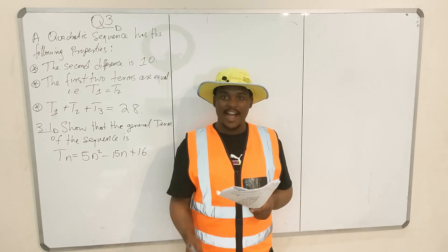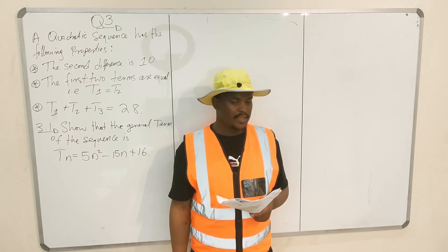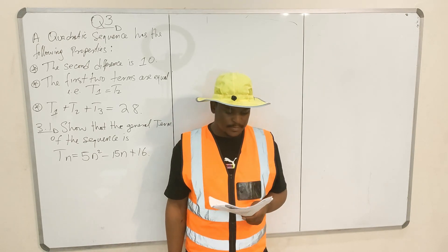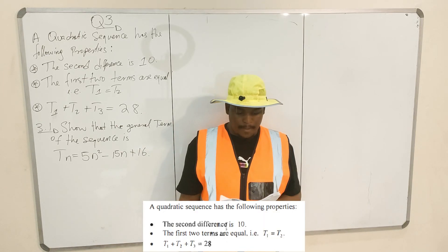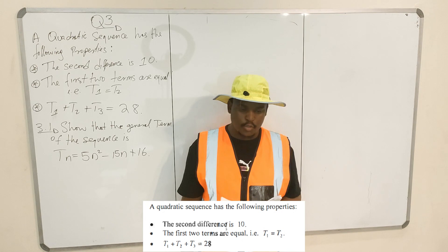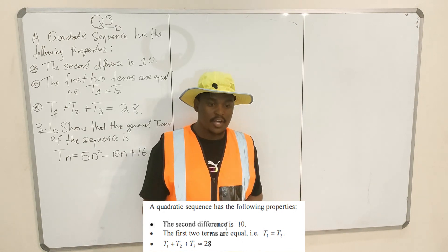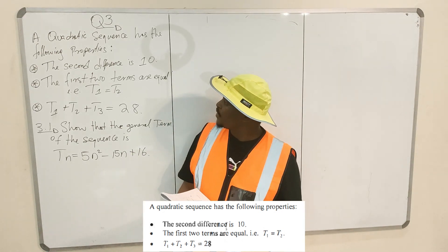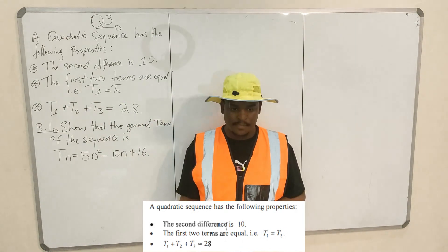We have a special guest here that I'll be doing this problem with. Question 3: a quadratic sequence has the following properties. The first property is that the second difference is 10.